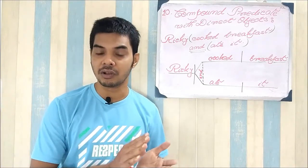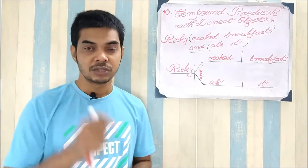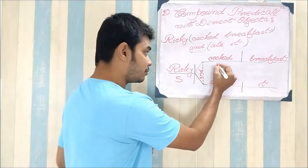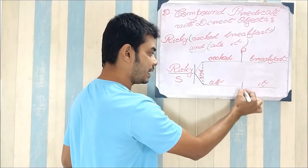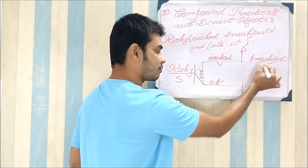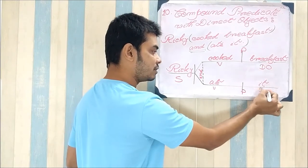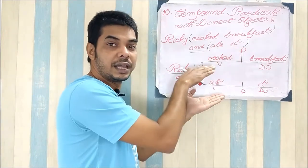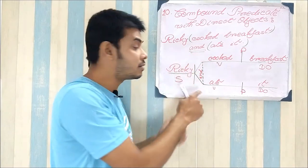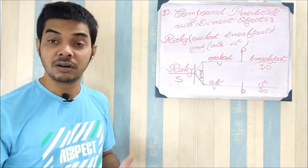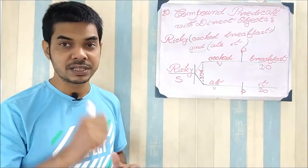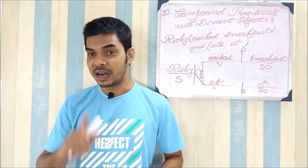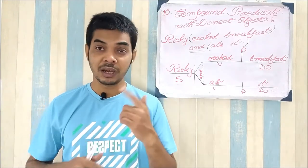Now we put it logically into our sentence diagram. We put the subject 'Ricky,' then a slash, then the predicate part. The predicate part has the verb 'cooked' with the direct object 'breakfast,' and the verb 'ate' with the direct object 'it.' These two predicates are also conjugated and joined with 'and,' so we put 'and' here and get the skeleton and diagram of the sentence. That's how we handle these sentences in diagramming — that's the tenth rule.